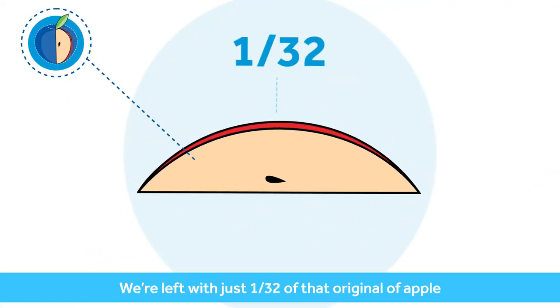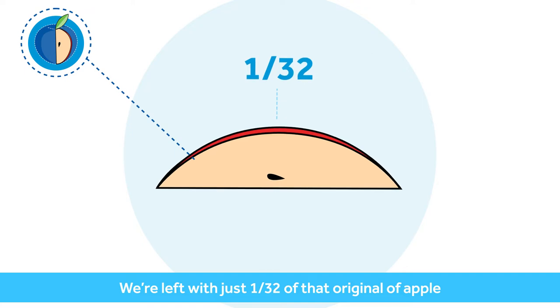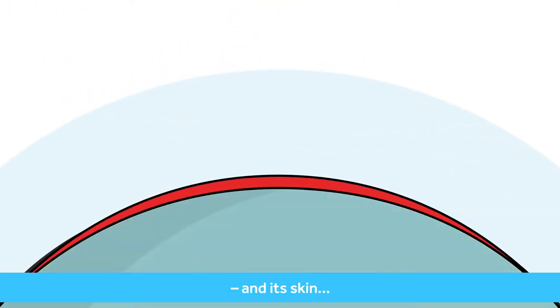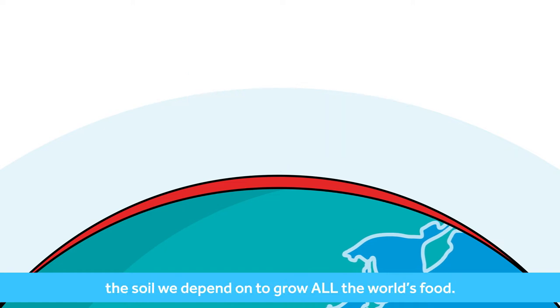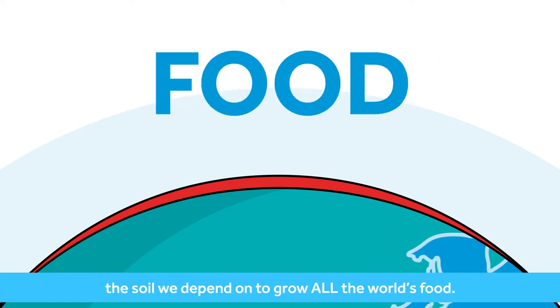We're left with just 1/32nd of that original apple and its skin. That is what represents all of the earth's topsoil, the same soil we depend on to grow all of the world's food.